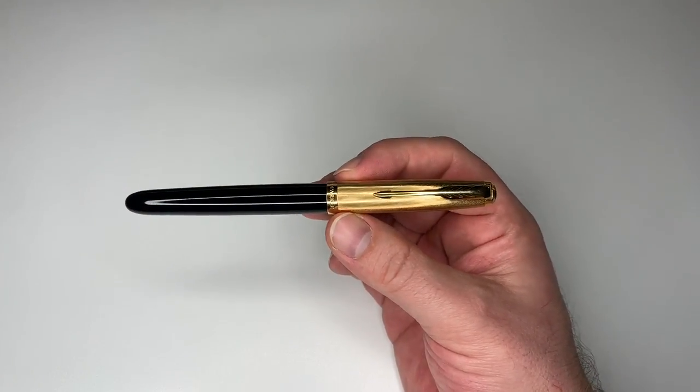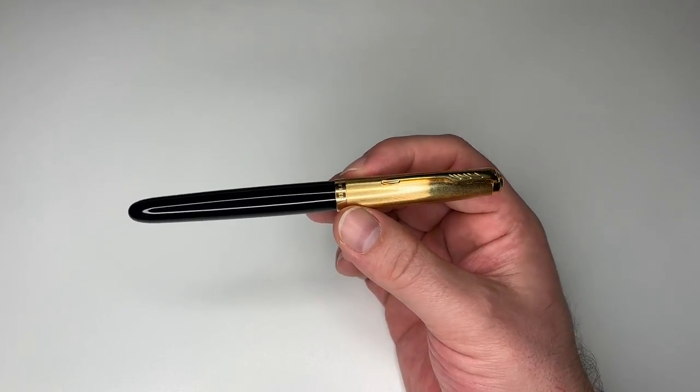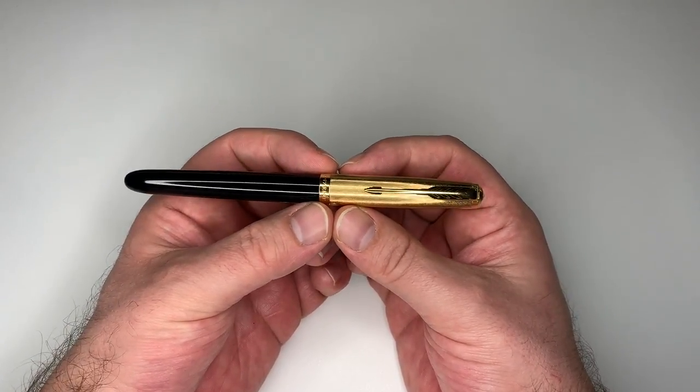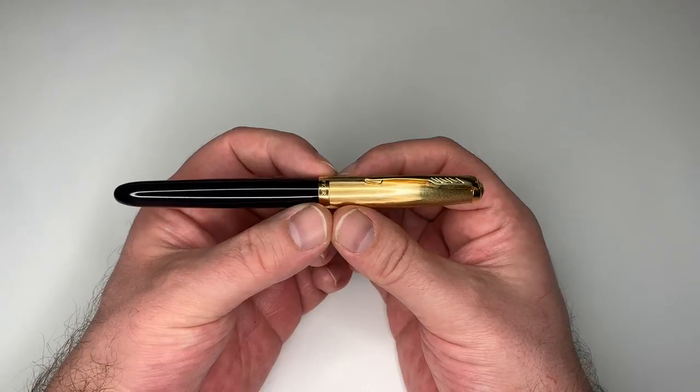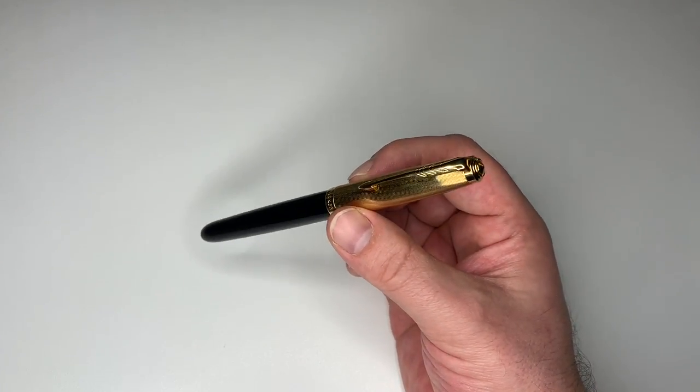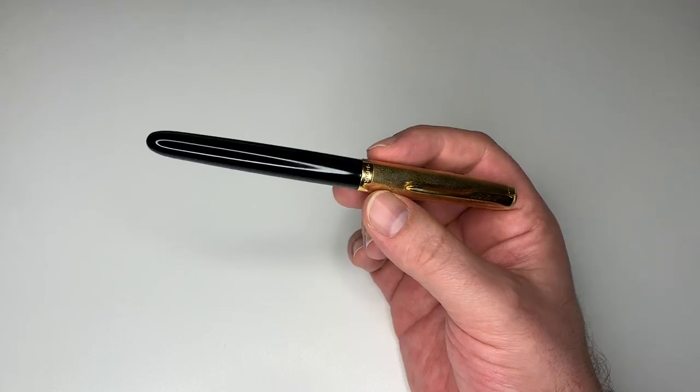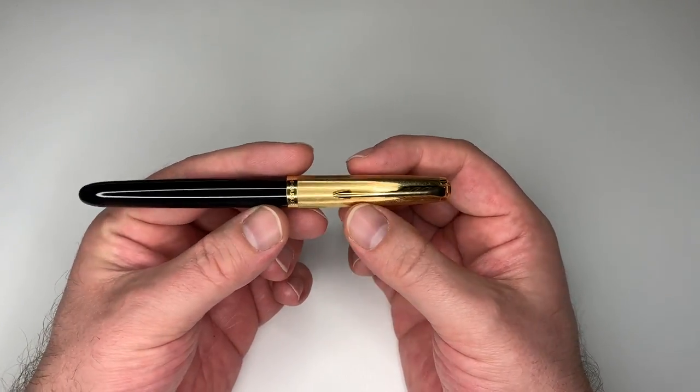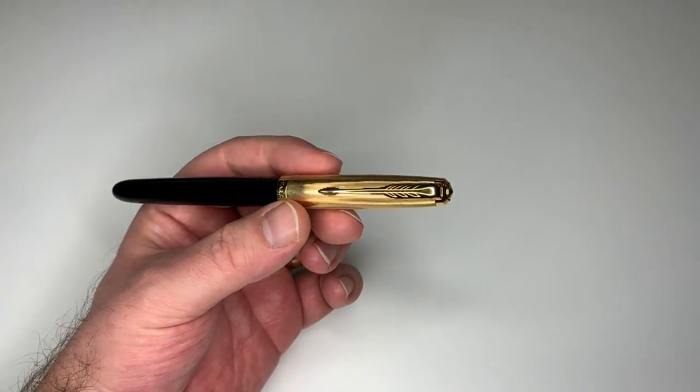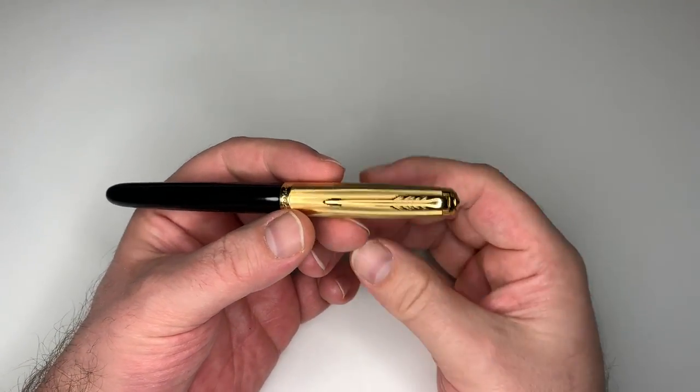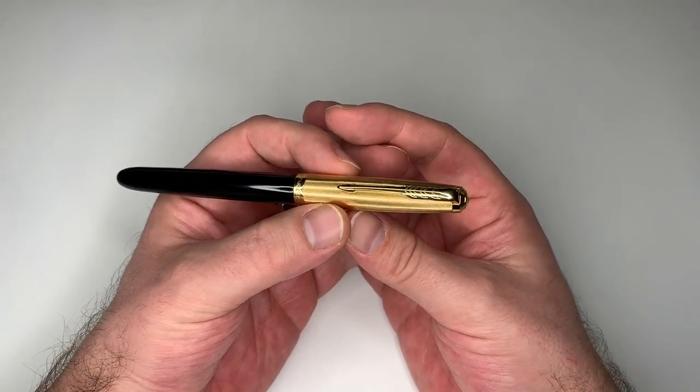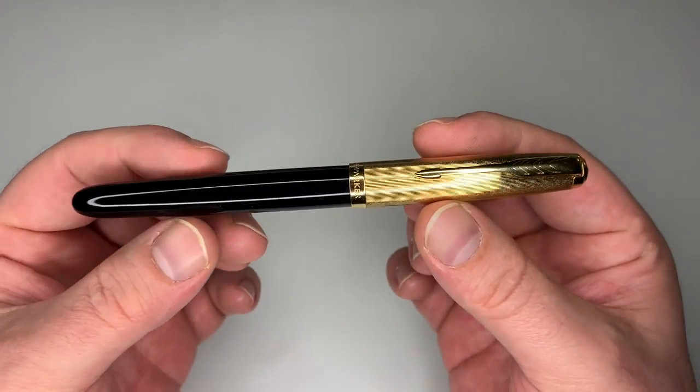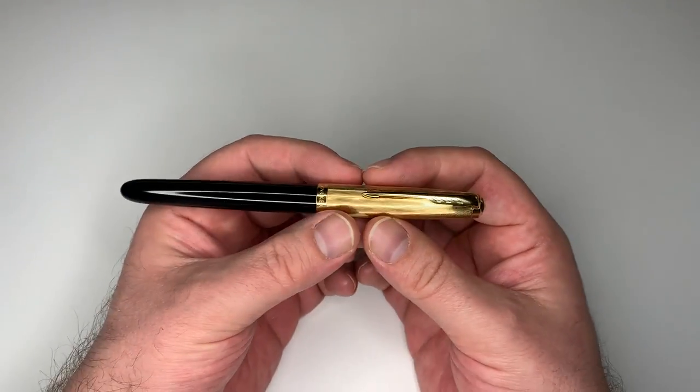But let's look at the writing implement itself. Of course it is the recognizable Parker 51, very very beautiful. I don't know why, but it does remind me of a 1950s or 1960s American car. I do love this rounded shape right here. It looks just so 50s, so 60s, it just looks so super cool, timeless. It's old school but modern at the same time.